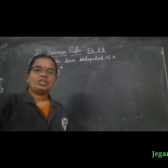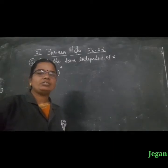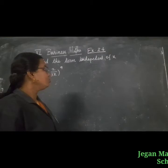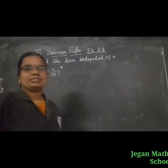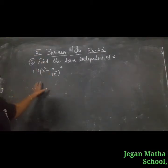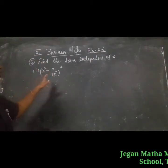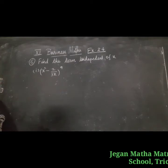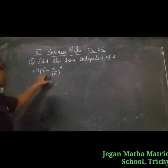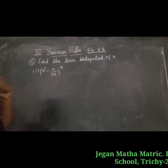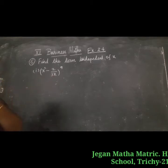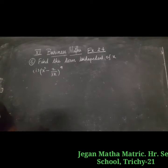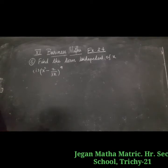Hello students, today we are going to see 11th standard Business Maths chapter 2, exercise 2.6. Let us see the 5th question: find the term independent of x in the expansion of x squared minus 2 by 3x, the whole power n. Given: x squared minus 2 by 3x, the whole power n.